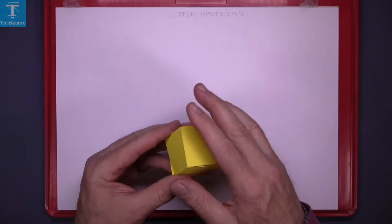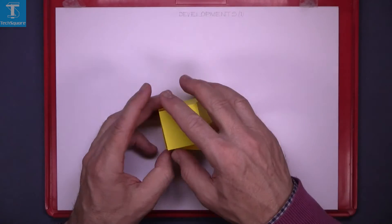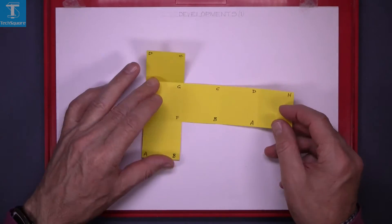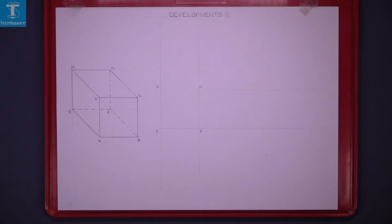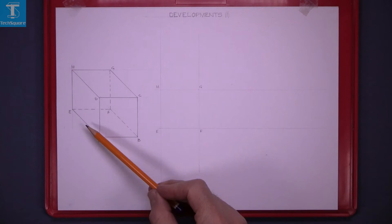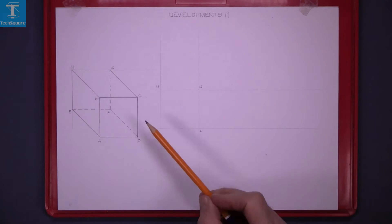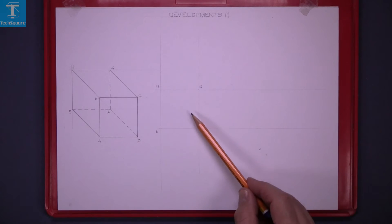What we're asked for is to draw the development of this cube. So what will it look like when it's folded out? Given the oblique drawing of the cube, we're told to draw the development of it out here.